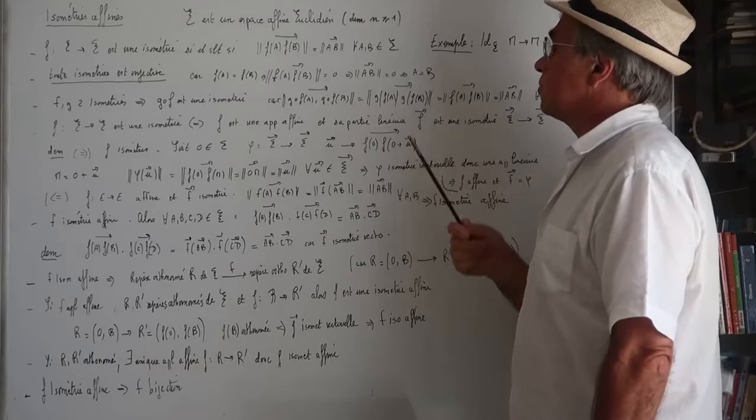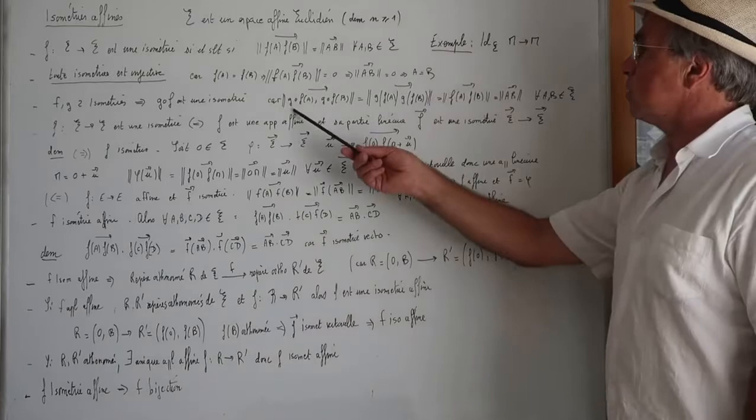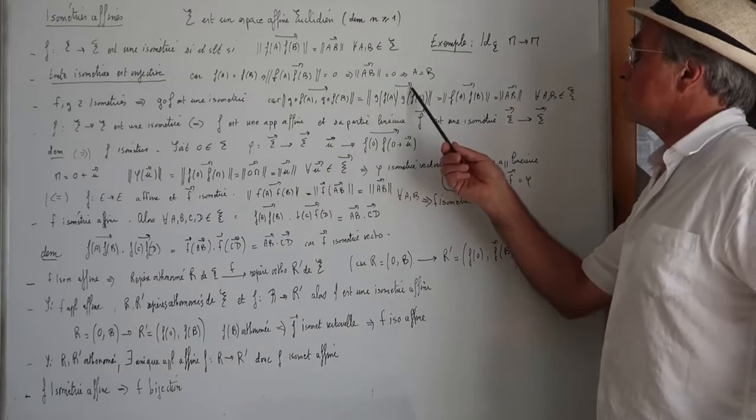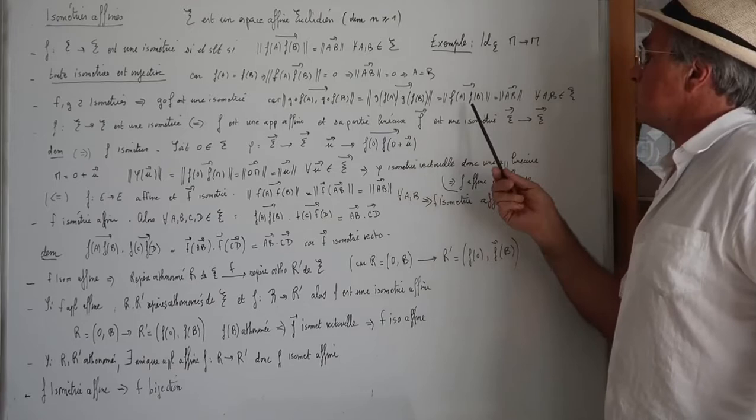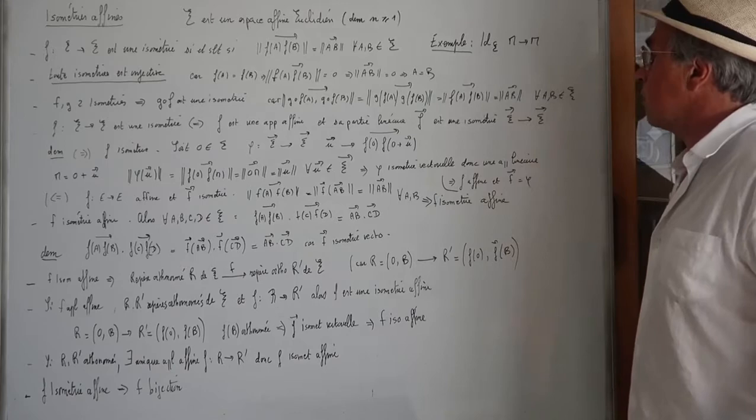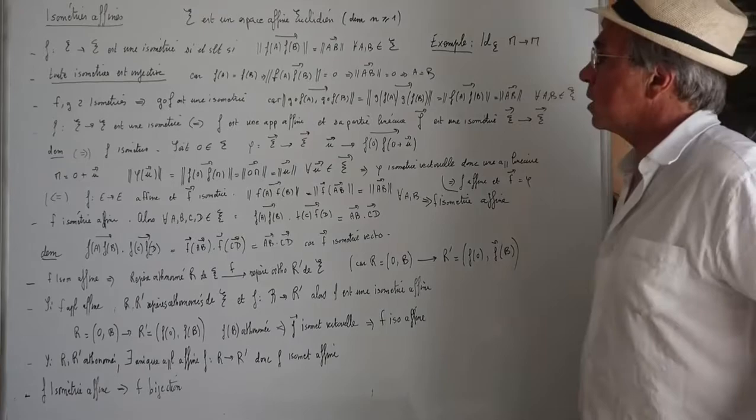Si F et G sont deux isométries, G∘F est une isométrie. Il suffit de dire que la norme de G∘F(A), G∘F(B) est égale à la norme du vecteur G(F(A)), c'est-à-dire G(A'), G(F(B)), c'est-à-dire G(B'). Et donc comme G est une isométrie, ça va faire norme de A'B', c'est-à-dire de F(A) à F(B). Et comme F est une isométrie, ça fait norme de AB, quel que soit les deux points A, B. Donc G∘F est une isométrie.